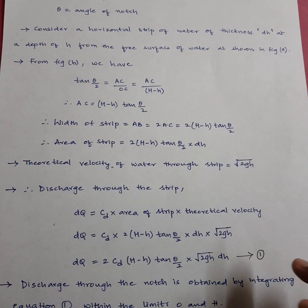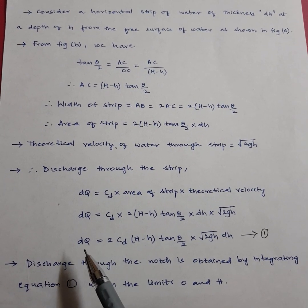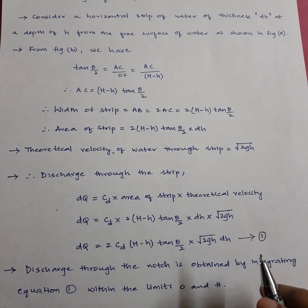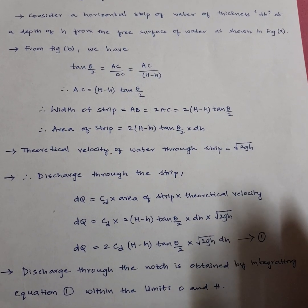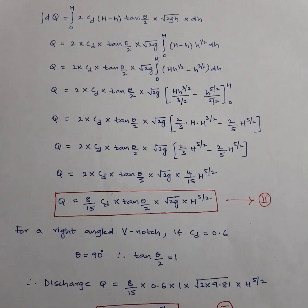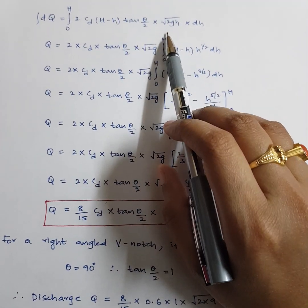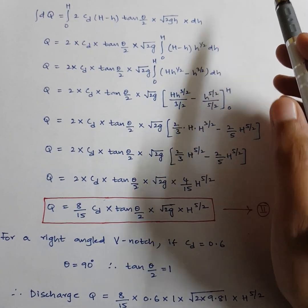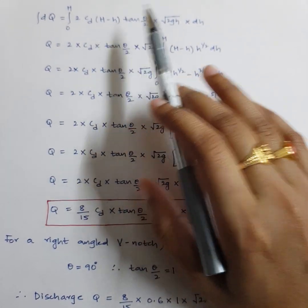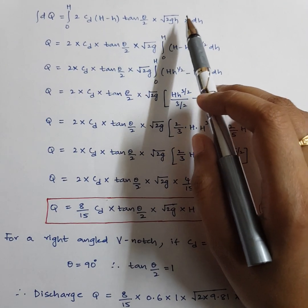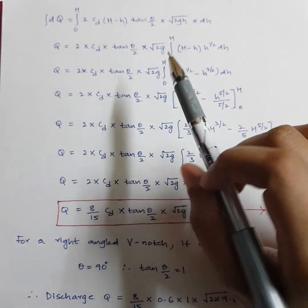To get discharge through the entire notch, we integrate equation 1 from 0 to H — zero when there is no water, and capital H at maximum. So Q equals the integral from 0 to H of 2·CD·(H − h)·tan(theta/2)·root(2g·h)·dH. Taking all constants outside: 2·CD·tan(theta/2)·root(2g), leaving the integral of (H − h)·root(h)·dH inside.